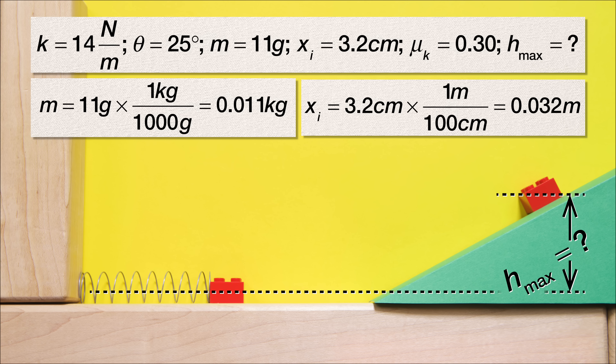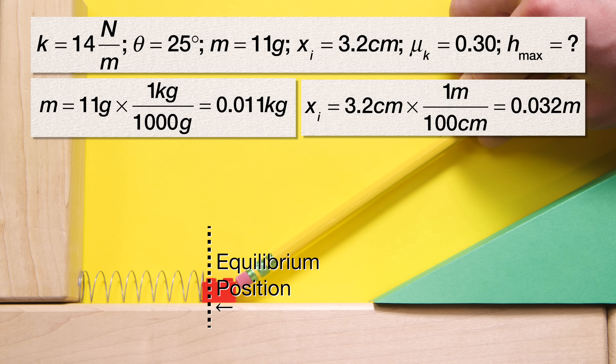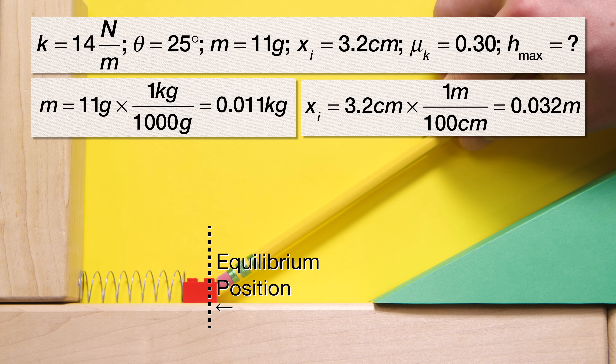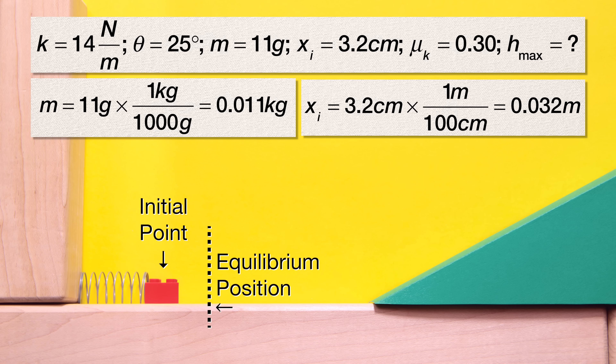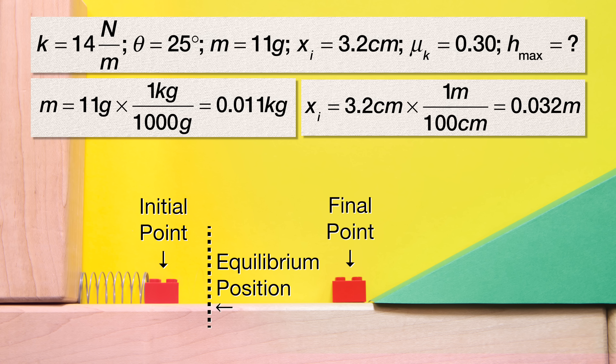On the level surface, there is no work done by friction and no work done by the force applied. Therefore we can use conservation of mechanical energy. We need to set the initial and final points. Let's set the initial point where the block is completely compressing the spring and the final point at the base of the incline.